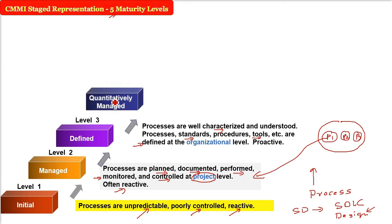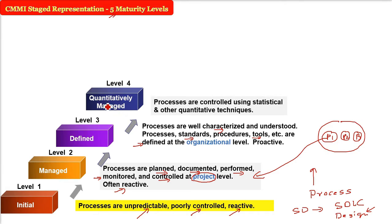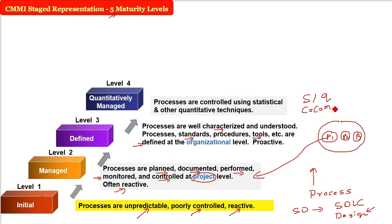Level three is proactive, unlike the first two levels. Level four is Quantitatively Managed. At this level, in addition to everything from levels one through three, statistical and quantitative techniques are applied — for example, estimating using the COCOMO model, scheduling, and performing earned value analysis. Everything is measured with numbers.